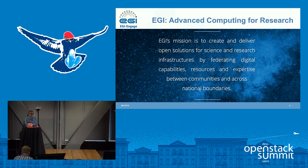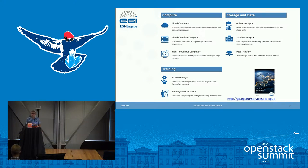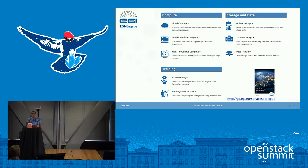EGI provides advanced computing for research. What we try to deliver is open solutions for science and research infrastructure by federating digital capabilities, resources, and expertise between communities and across national boundaries. We do this by offering a set of services in three big categories. The first is compute, which includes cloud compute — infrastructure as a service — running VMs, block storage, and related things.